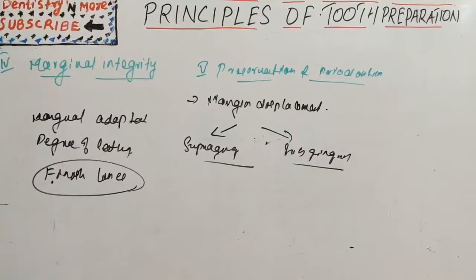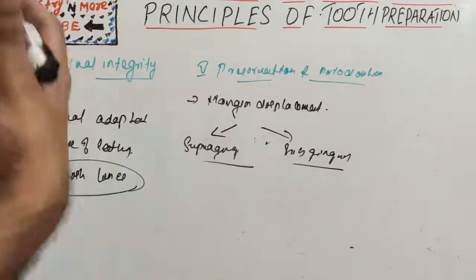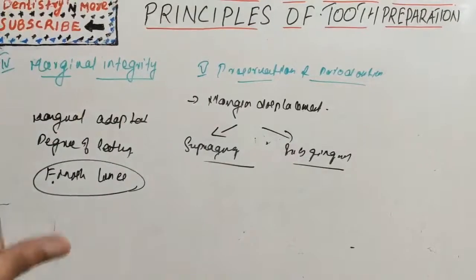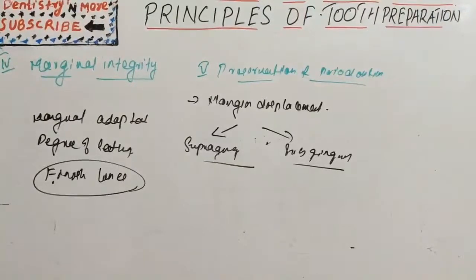Additional indications for subgingival margins include need for additional retention, and hiding the margin of a metal-ceramic crown behind the labiogingival crest for aesthetics, though root sensitivity may occur. The finish line should not be closer than 2 mm to the alveolar crest; placement in this area can result in gingival inflammation, pocket formation, or loss of alveolar crest height.